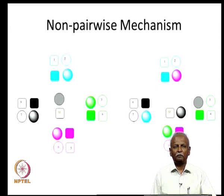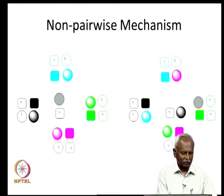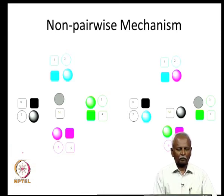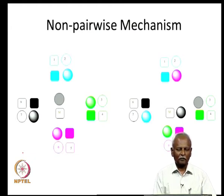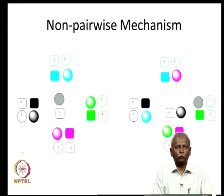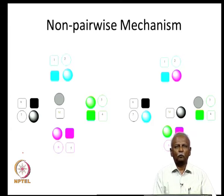We will briefly revise what we discussed earlier. I have before me a set of 4 olefins, represented by green, magenta, blue, and black alkylidene groups. The alkylidene groups that are going to be exchanged are shown as round figures, and the ones that are stationary or remain in the same place are shown in square shape.